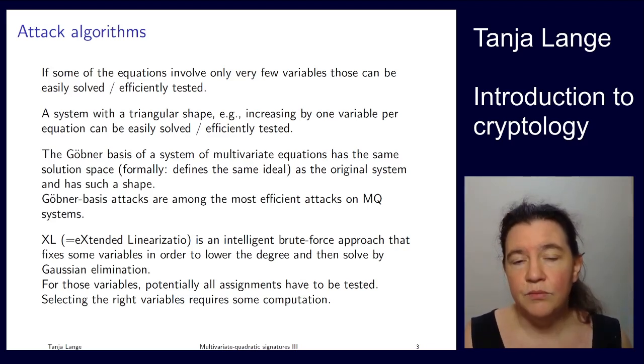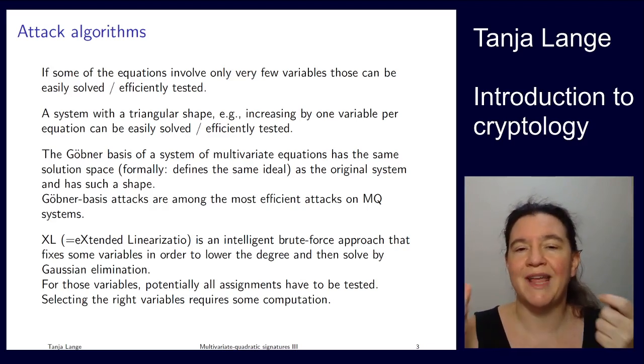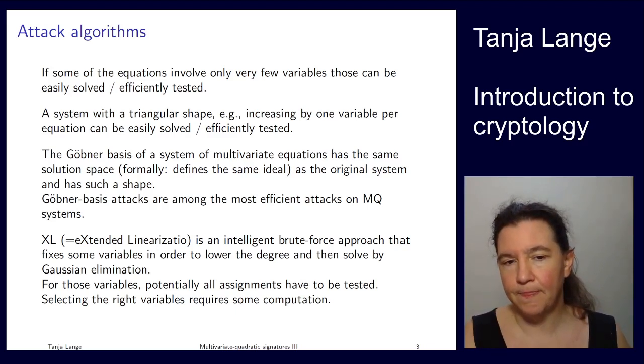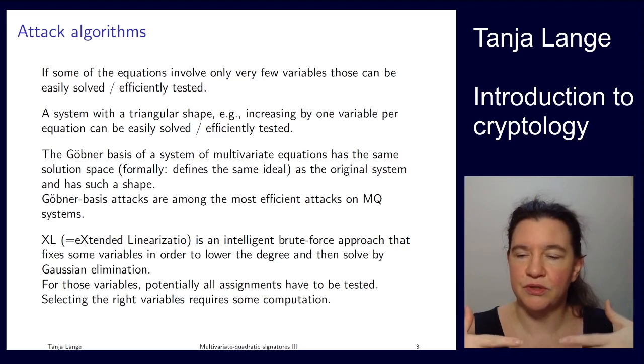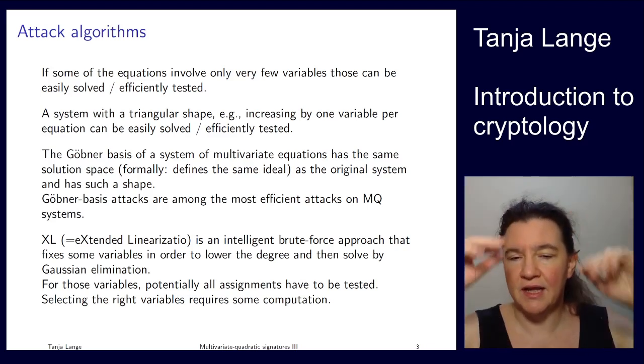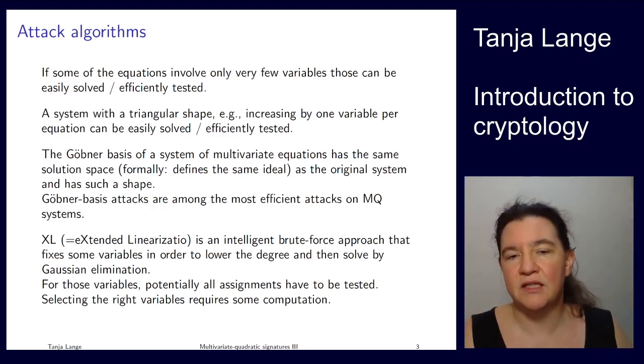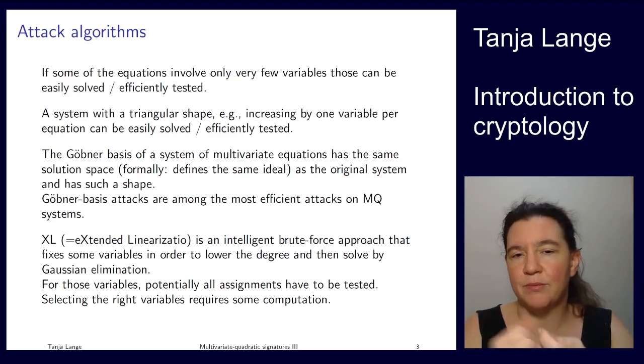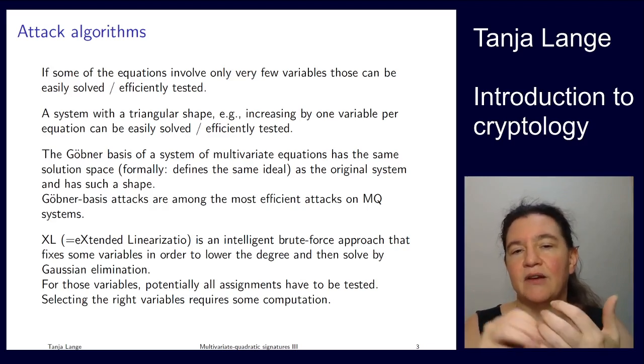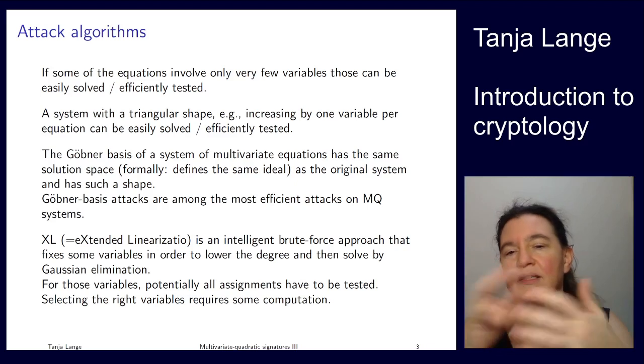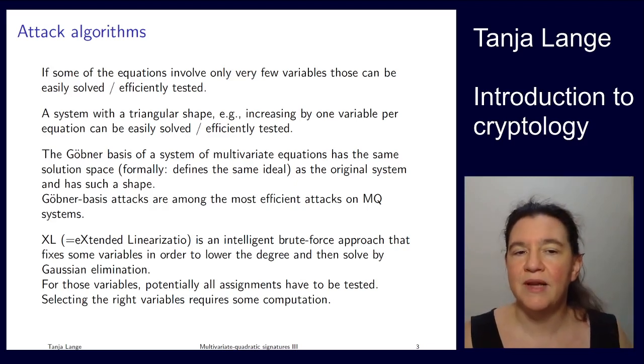Once you have a linear system you can solve by Gaussian elimination, but of course you potentially have to try each and every assignment of these parts where you're brute forcing it. So it's a fast computation once you have fixed them, but if it's 2 to the large number of those computations, then it's still not a successful attack. XL depends on how well these variables mix and whether you can find something which has more to do with others and some which has less to do with others. Gröbner basis and extended linearization are the typical approaches to attack multivariate systems.